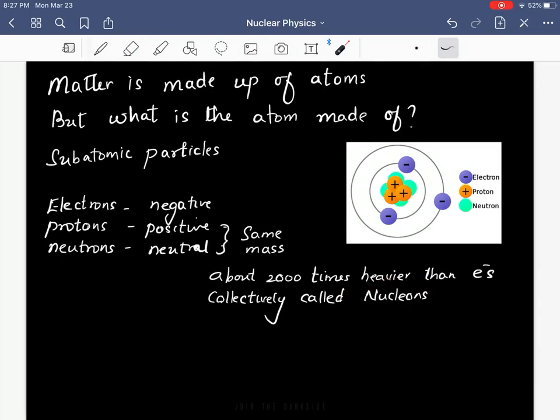They have pretty much the same mass; in fact, they are about 2000 times heavier than electrons. When you consider the mass of electrons in comparison to protons and neutrons, they are negligibly small.